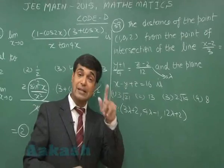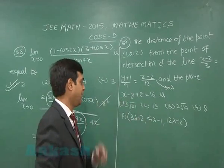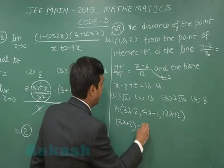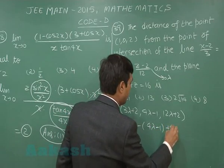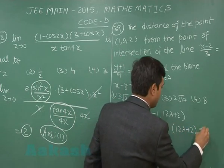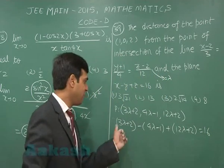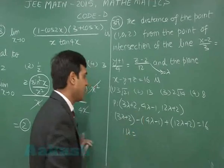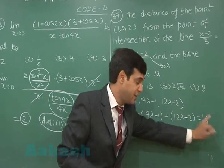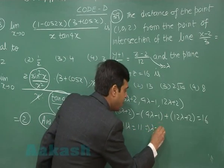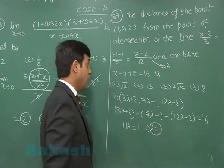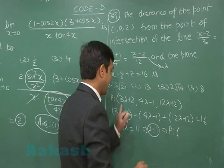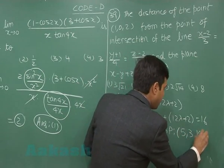We are talking about intersection of line and plane. Put this point on this plane. We get 3 lambda plus 2 minus (4 lambda minus 1) plus 12 lambda plus 2 equals 16. On simplifying, this is 15 minus 4, that is 11 lambda equals 3 plus 2, 5, and here 16, giving me 11. So lambda becomes 1. Put this lambda back in point P, we get point P as (5, 3, 14).